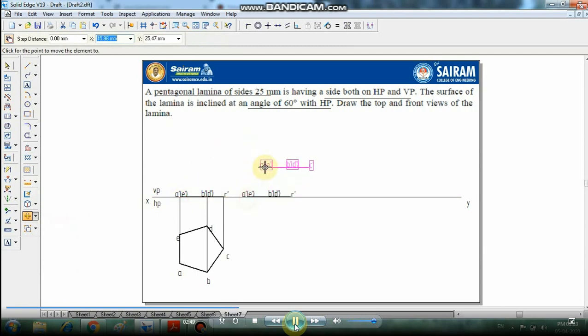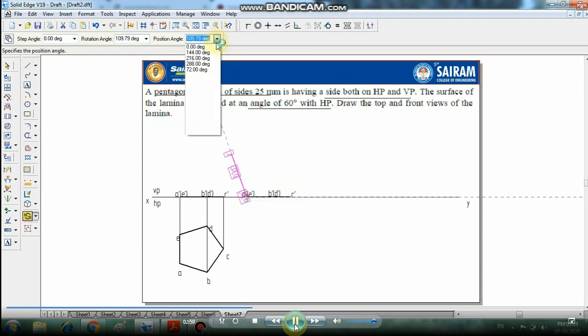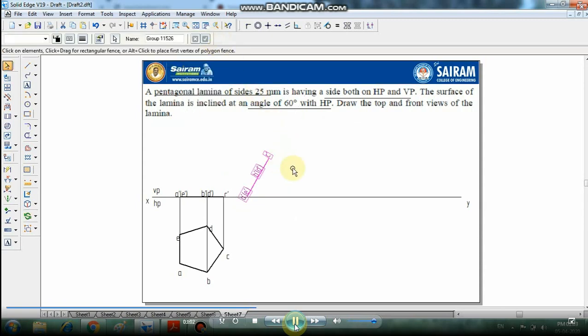Now it is to be rotated 60 degrees with the horizontal plane. Select the center of rotation and rotate it for 60 degrees. Ungroup this, you can move it a little bit for visibility.